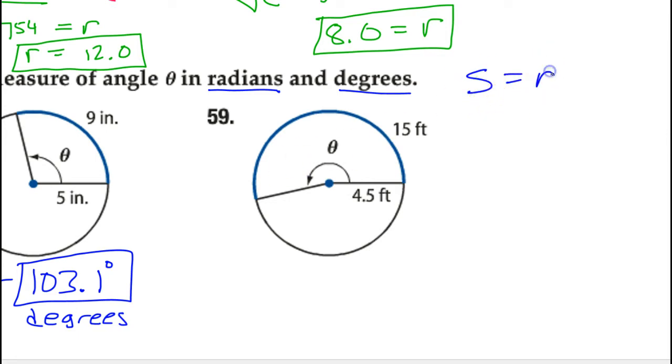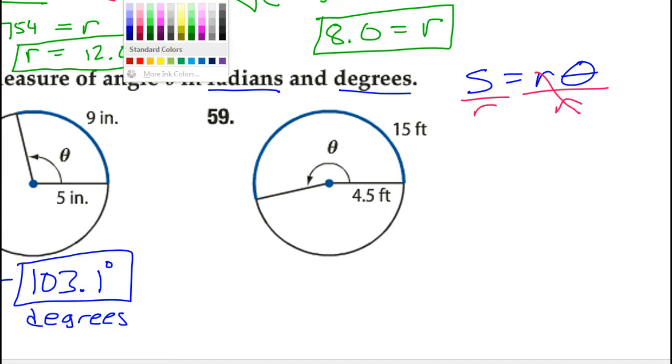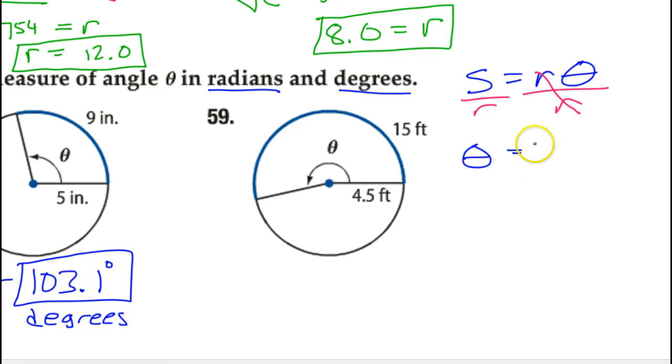The arc length is equal to the radius times the angle. And in fact, another way to think of this, another version of the same formula, if I just rearrange this to get theta by itself just as a formula. Theta is equal to arc length over radius. So the angle is going to equal the arc length over the radius. This is another version of the same formula. And since we want the angle, then this is the version of the formula that we're going to use. So let's think of it that way on this problem.